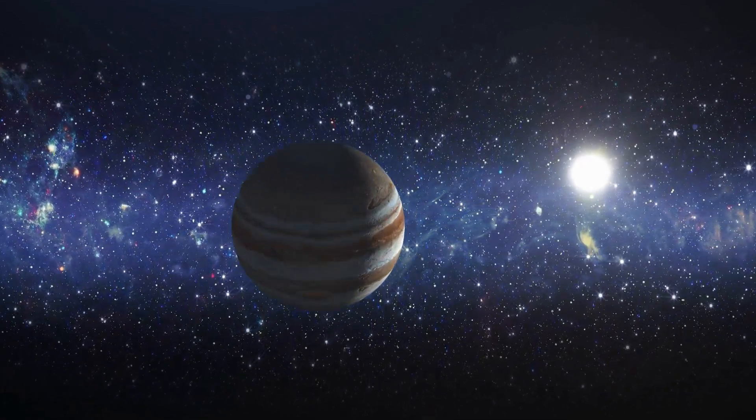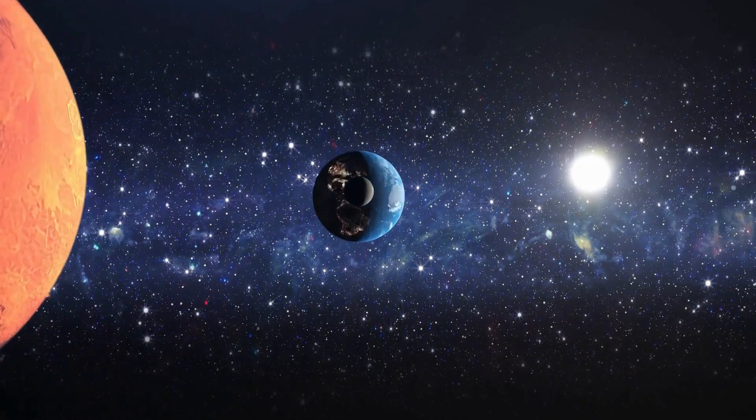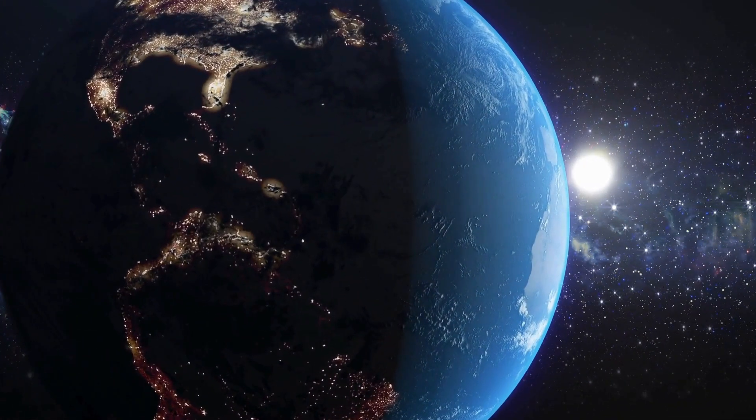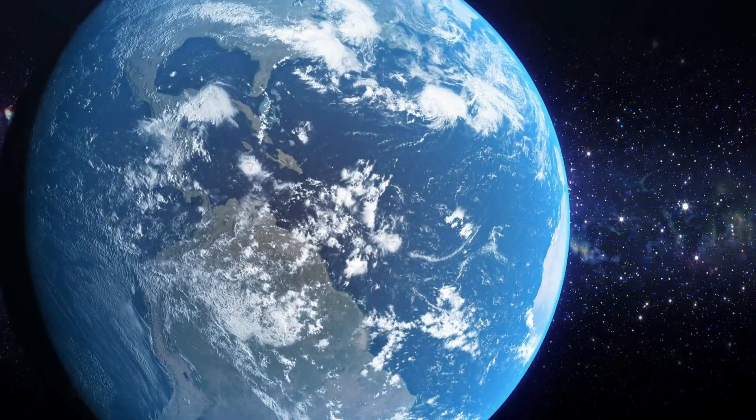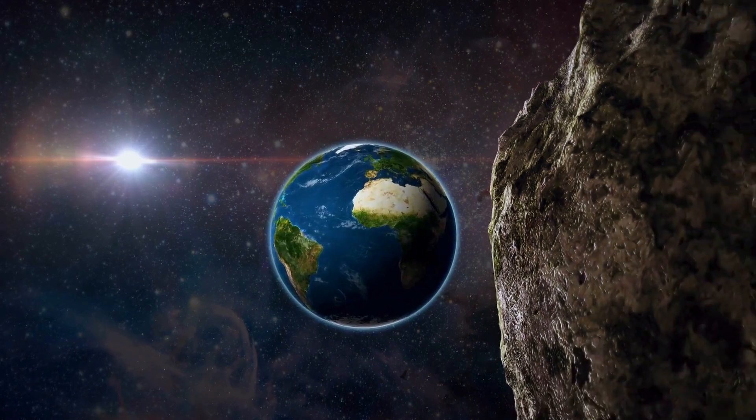You know how Earth has one moon. Well, sometimes we get a second one. It's temporary, though. We're talking mini-moons. They're like cosmic hitchhikers that swing by Earth's orbit for a quick visit. Today we're doing a deep dive on one in particular.